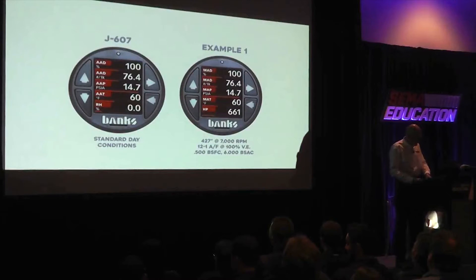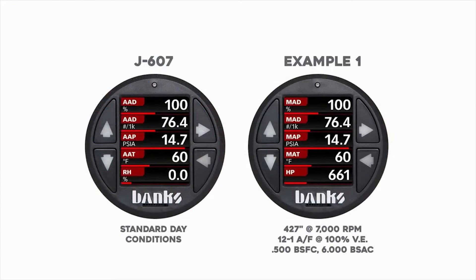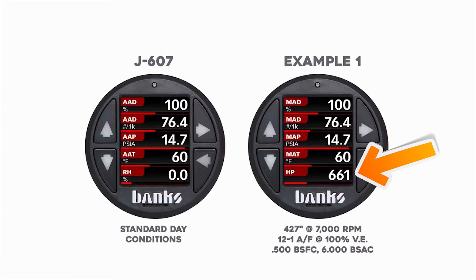Our starting point is ambient air density. We're on a 100% J607 day at 76.4 pounds of air per thousand feet. Now we're going to run the engine — with that air density and those conditions, the engine will make 661 horsepower at 7,000 rpm.